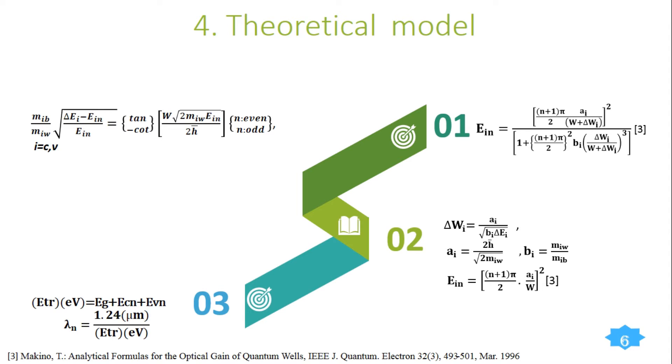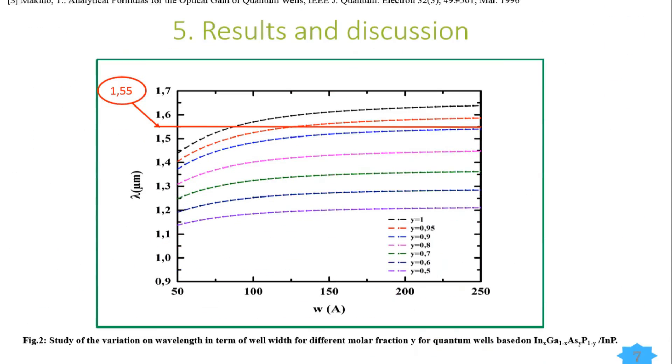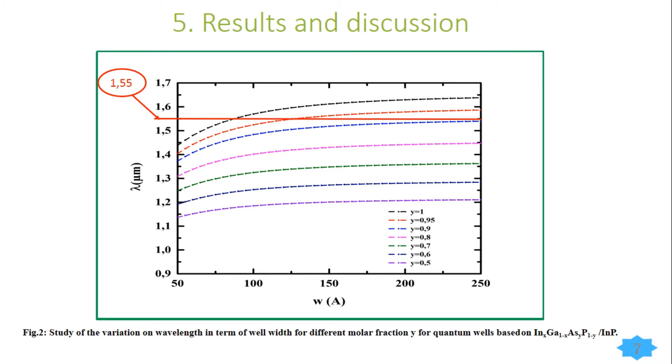In order to optimize the better achievement of well width for the wavelength 1.55 micrometers, we have these results. We have calculated sub-band energy for conduction and for valence band. Figure 1 is the study of variation of wavelength in terms of well width for different molar fraction for quantum wells based on InGaAsP on InP.